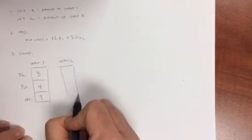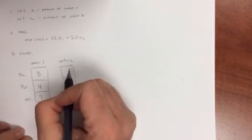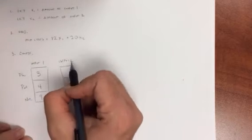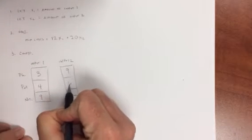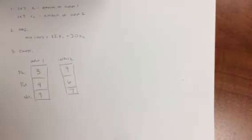Input two, on the other hand, provides nine units of phosphates, six units of potash, and seven units of nitrates. So this is the beginning of our constraints.